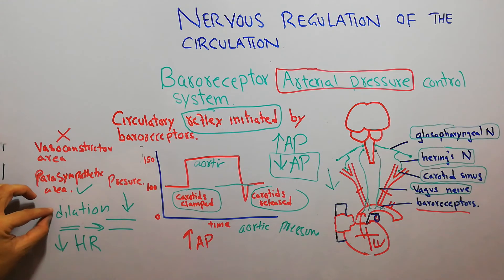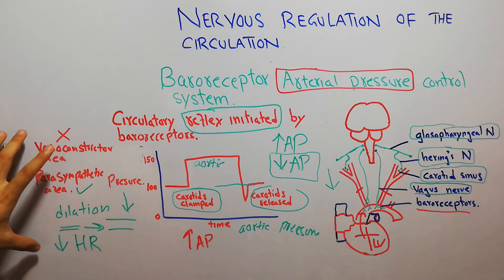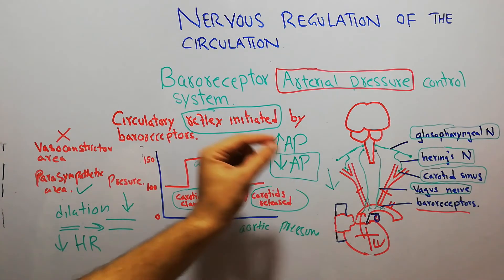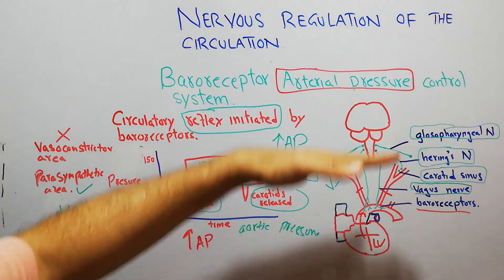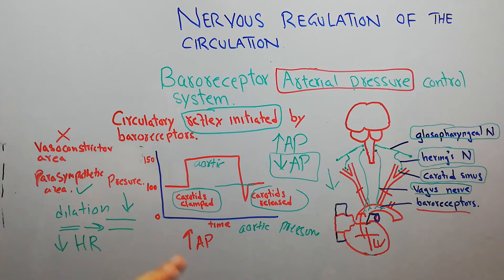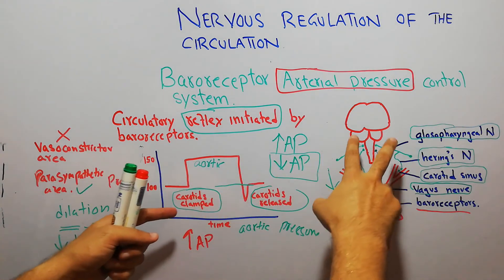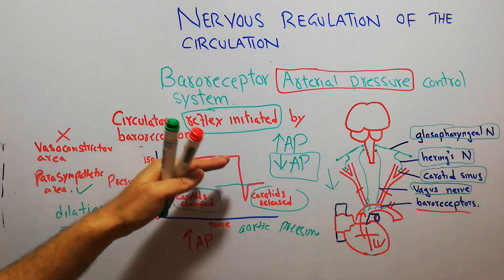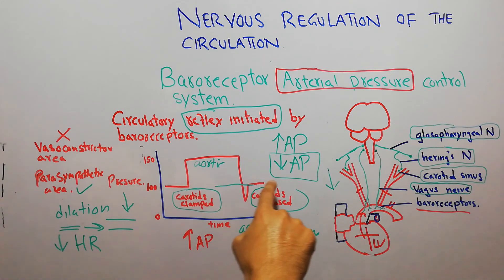This leads to dilation at the arteriolar level and decrease in heart rate, which also decreases the pumping power of the heart. This reflex basically leads to a decrease in arterial pressure. So an increase in arterial pressure initiates a reflex which leads to a decrease in arterial pressure, with baroreceptors trying to normalize arterial pressure. But if the arterial pressure is decreased — for example when the carotid arteries are clamped — they initiate a reflex which leads to increase in aortic pressure, and as soon as the pressure is normalized, arterial pressure becomes normal.